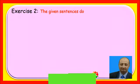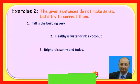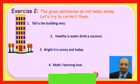Let's solve another exercise. The given sentences do not make sense. Let's try to correct them. The scrambled sentences are: 'Tall is the building very,' 'Healthy is water drink a coconut,' 'Bright it is sunny and today,' and 'Math I learning love.' The first corrected sentence would be: 'The building is very tall.' Now the sentence makes complete sense. Remember to begin with a capital letter and end with a full stop.